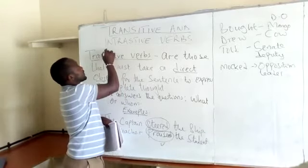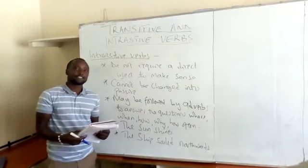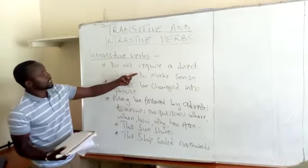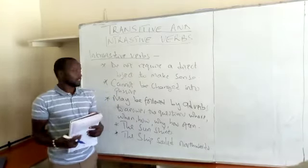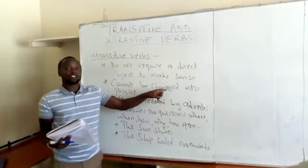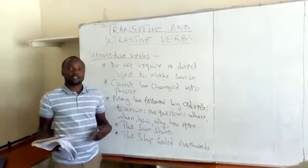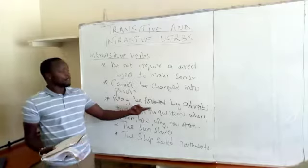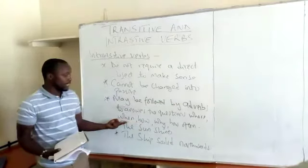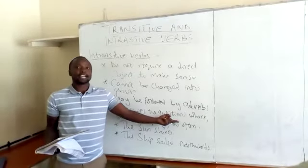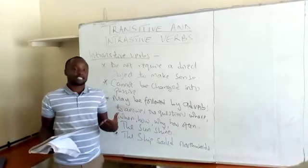Next, we are going to look at intransitive verbs. Intransitive verbs are those that do not require a direct object to make sense. These verbs cannot be changed into passive because they do not have an object or noun. They may be followed by adverbs to answer the questions where, when, how, why, and how often, but it is also good to note that they can come at the end of the sentence.